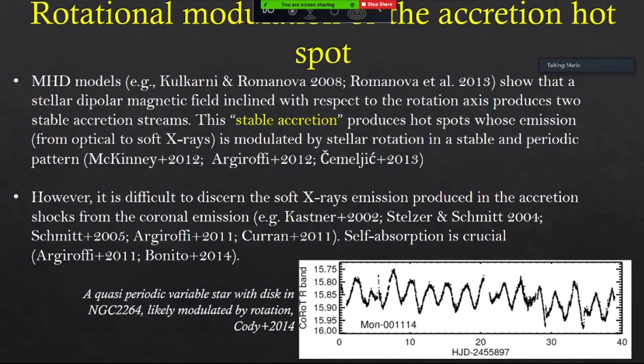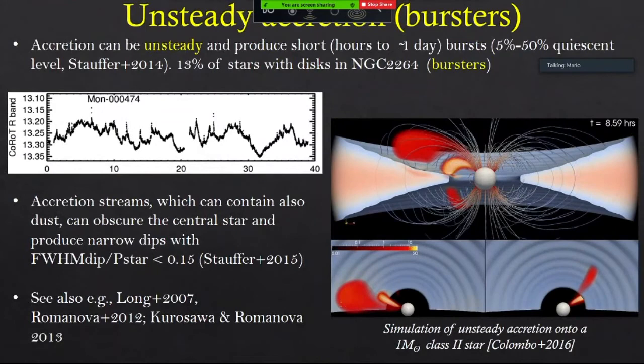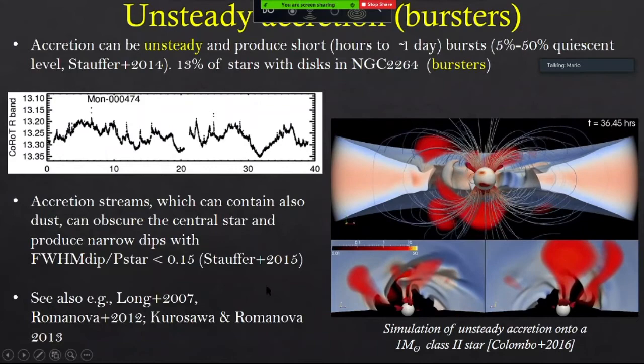Accretion can be stable or unstable. We talk about stable accretion when the accretion funnels are stable — typically launched at the co-rotation radius where the disk and the star rotate at the same velocity. In this case, the funnels are stable, we have two stable accretion spots, and their optical, UV, and soft X-ray emission is modulated by stellar rotation. However, at least until our study it was very difficult to actually distinguish this soft X-ray emission from the coronal emission, also because the accreting material itself can absorb part of the soft X-ray emission.